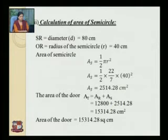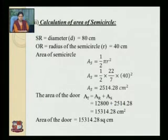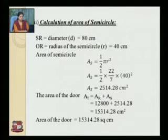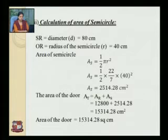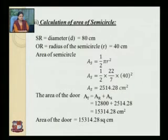Therefore, the area of the door AT equals AR plus AS, that is 12,800 plus 2,514.28, which equals 15,314.28 cm squared.